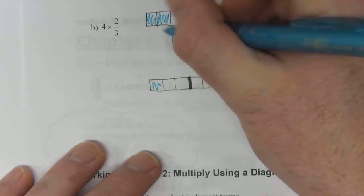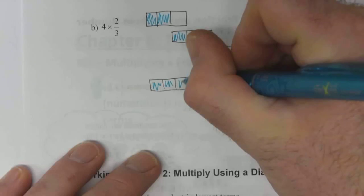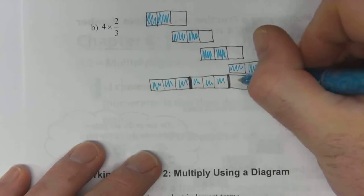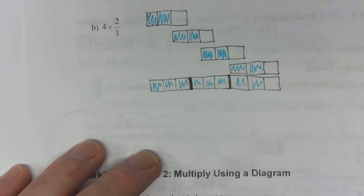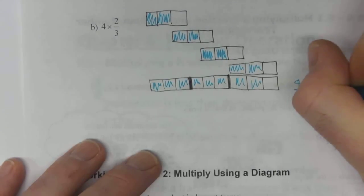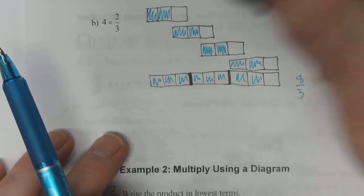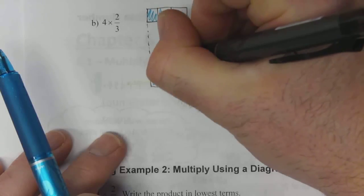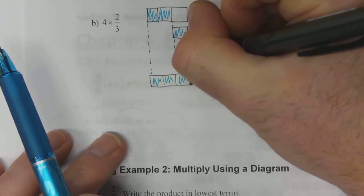And then we can do it. Those ones come down. That's 2, 3, 4, 5, 6, 7. We have 8 thirds shaded. Line these up.